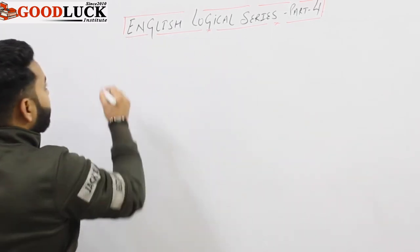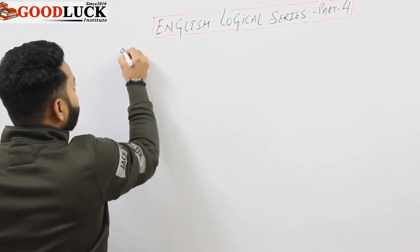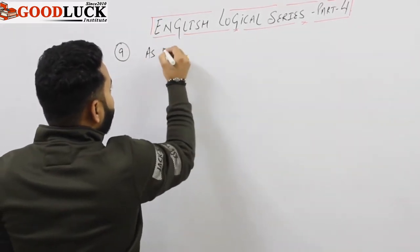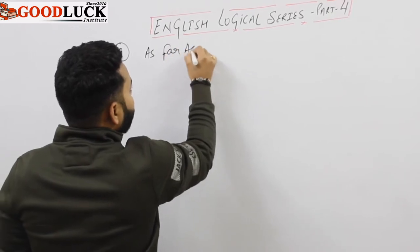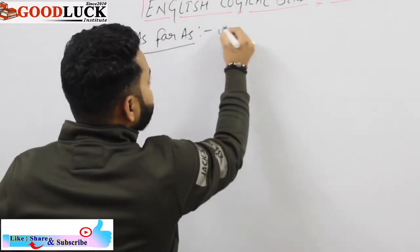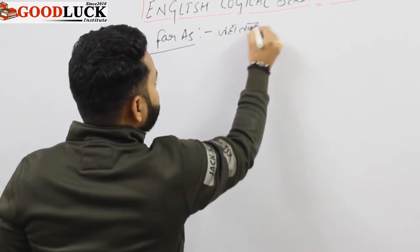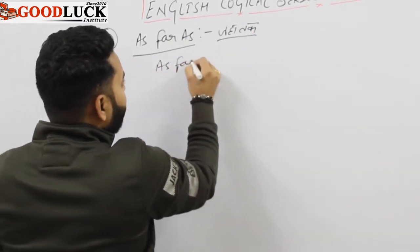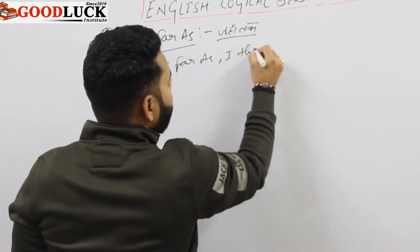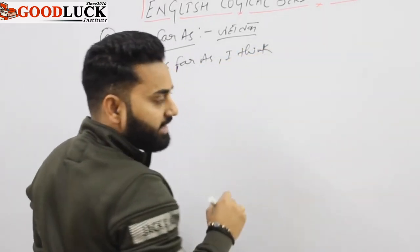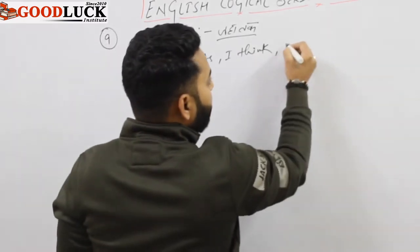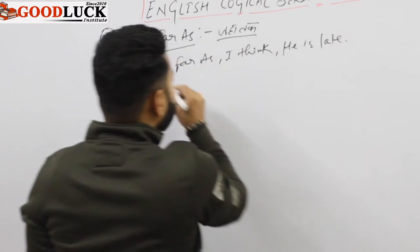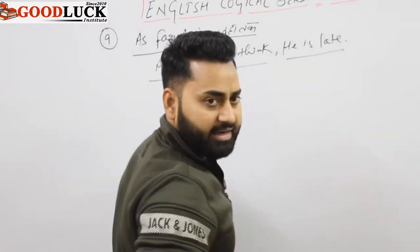The next one we are going to do is Logical No. 9, and that is our use of 'as far as'. As far as means 'jahaan tak' — as far as. Like if I say, 'as far as I think' — yani jahaan tak mujhe lagta hai — he is late. Means, as far as I think, he is late.